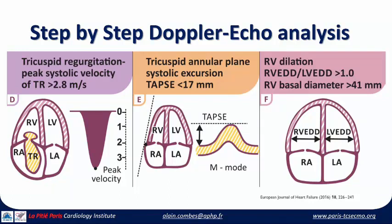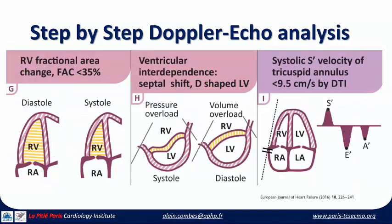TAPSE should be over 16–17mm; when severe RV failure occurs it will be decreased below 17. The RV will dilate, and the ratio of RV end-diastolic to LV end-diastolic dimension will be over 1. RV basal diameter will be over 41 mm and RV fractional area will be decreased. Using tissue Doppler, the systolic velocity of the tricuspid annulus — normally over 10 cm/s — will fall below 9.5 cm/s, which is one of the criteria to diagnose severe RV failure.